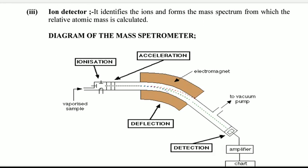Then you have ion detector at the end. It identifies the ions and forms mass spectrum from which relative atomic mass is calculated. The mass spectrum is a graph, appearing graph-like as you shall see later.